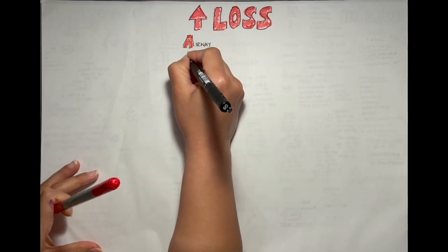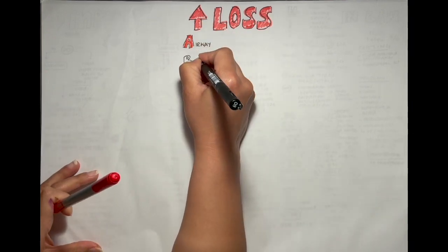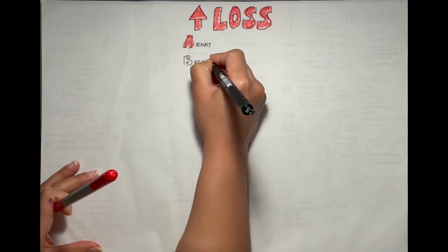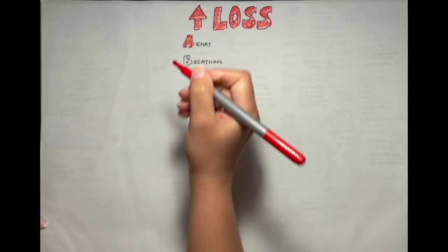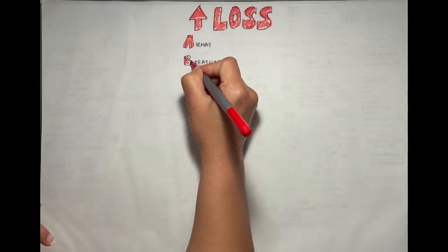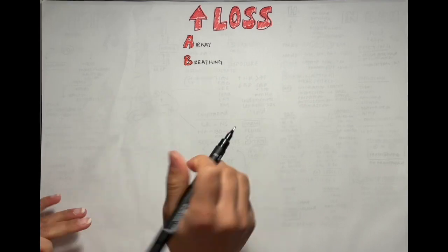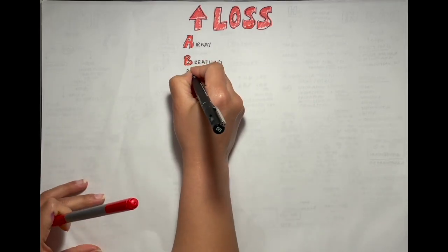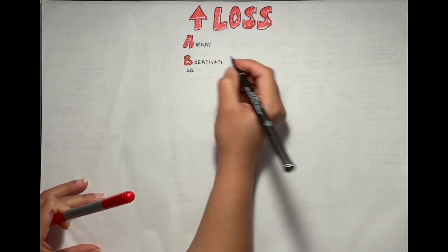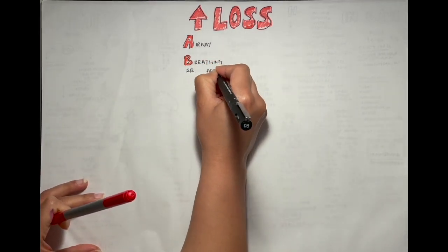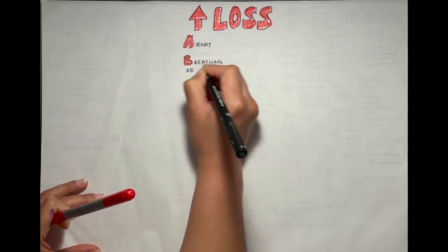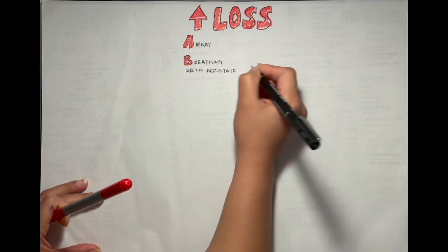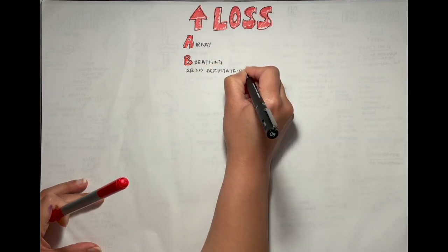Breathing is assessed by counting the respiratory rate, applying a SATS monitor, and auscultation. If the patient is tachypneic, that might be a sign that the patient is volume down. On the other hand, if you hear crackles, that might indicate fluid overload.